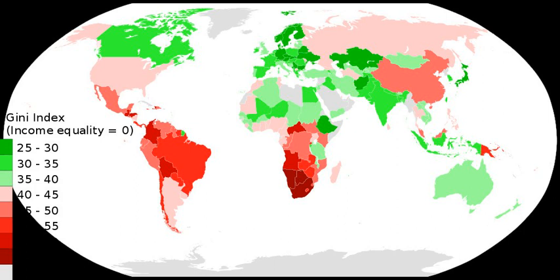Income distribution can vary greatly from wealth distribution in a country — see list of countries by distribution of wealth. Income from black market economic activity is not included and is the subject of current economic research.